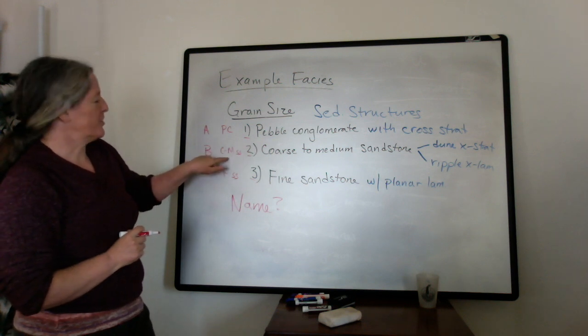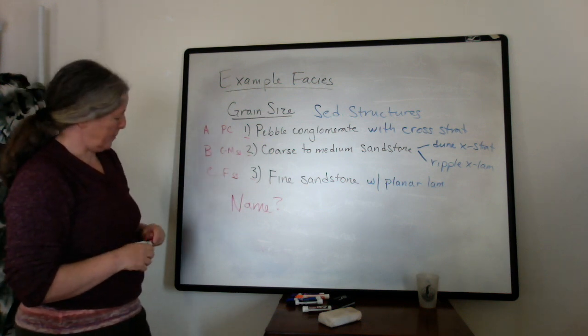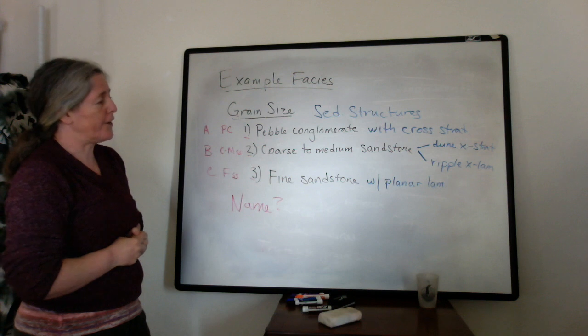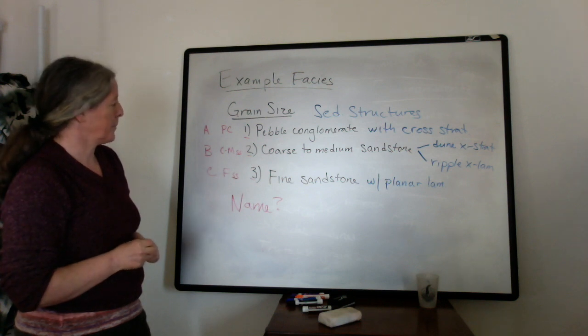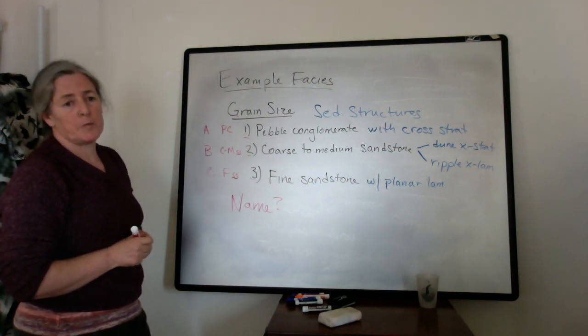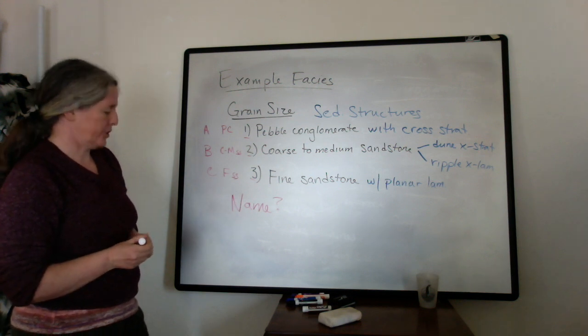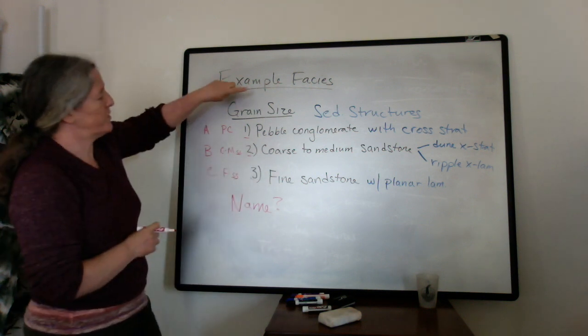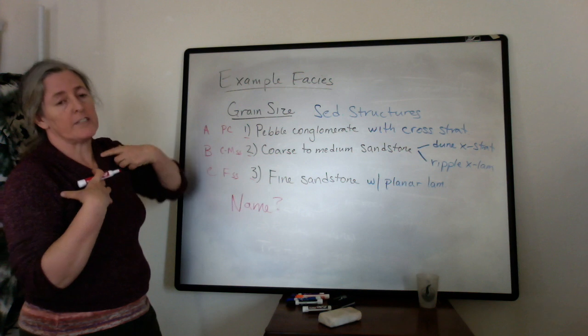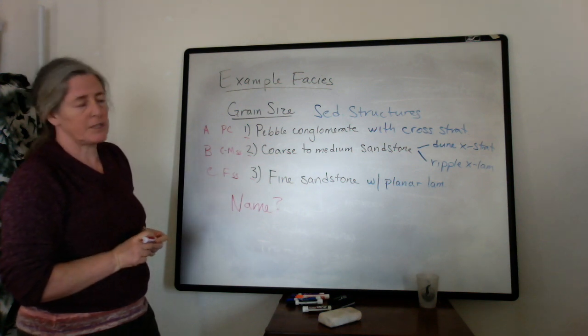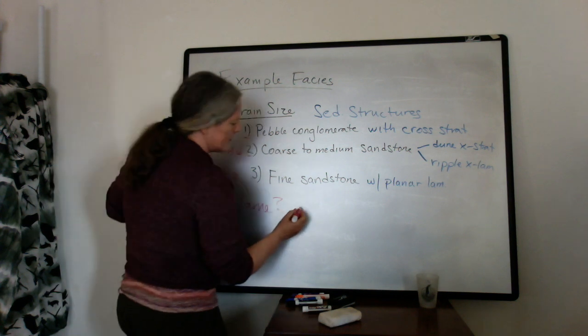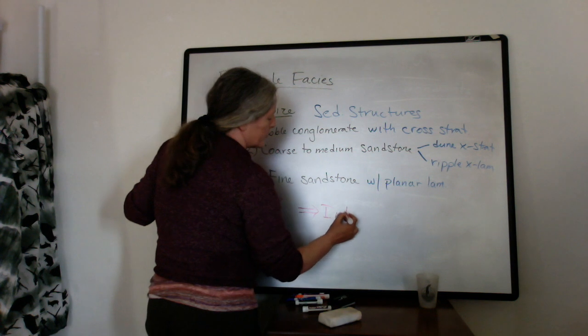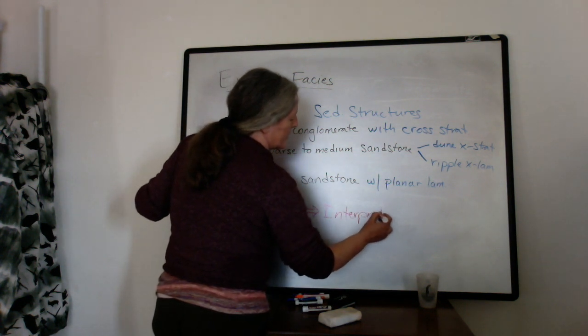If we divided this into two, maybe we'd add another character or indication whether it was dune cross stratified or ripple cross laminated. So those would be working names when a scientist is making their observations. But then often what happens is that we use these facies as a means to interpret the ancient depositional environment that they formed in. And in that case, sometimes when we do the interpretation, we give names that reflect the environment.